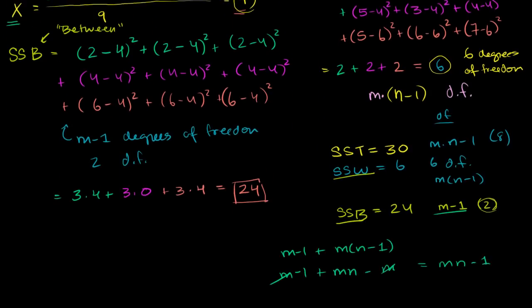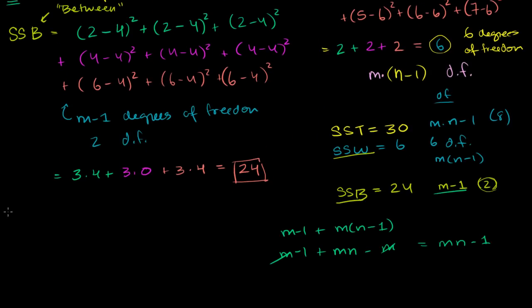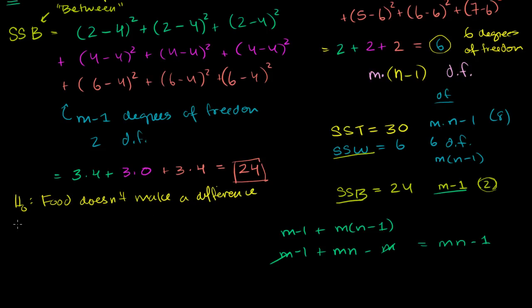Let's do a hypothesis test. My null hypothesis is that the means are the same — food doesn't make a difference. My alternate hypothesis is that it does. Quantitatively, if food doesn't make a difference, the true population means of the groups will be the same: the mean of the population taking food 1 equals food 2, which equals food 3. If our alternate hypothesis is correct, then these means will not all be the same.